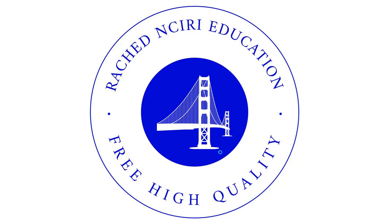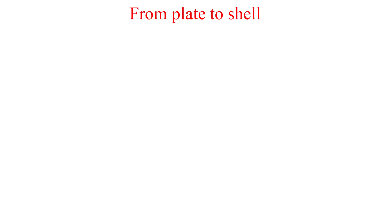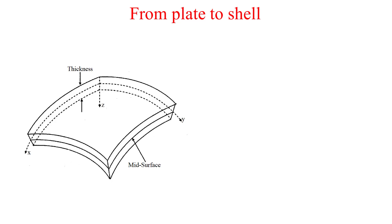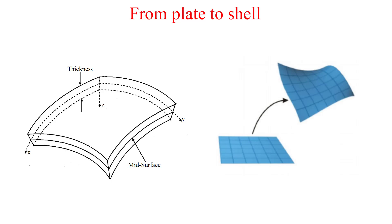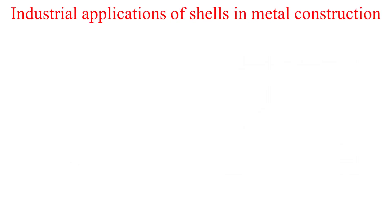In this educational video, I'll introduce the concept of a shell as simply and clearly as possible. A shell can be simply seen as a curved plate. It has a thickness which is negligible compared to its other dimensions. Like a plate, it has a mid surface which represents the shell, located at the half thickness — but unlike a plate, it is not flat; it is curved.